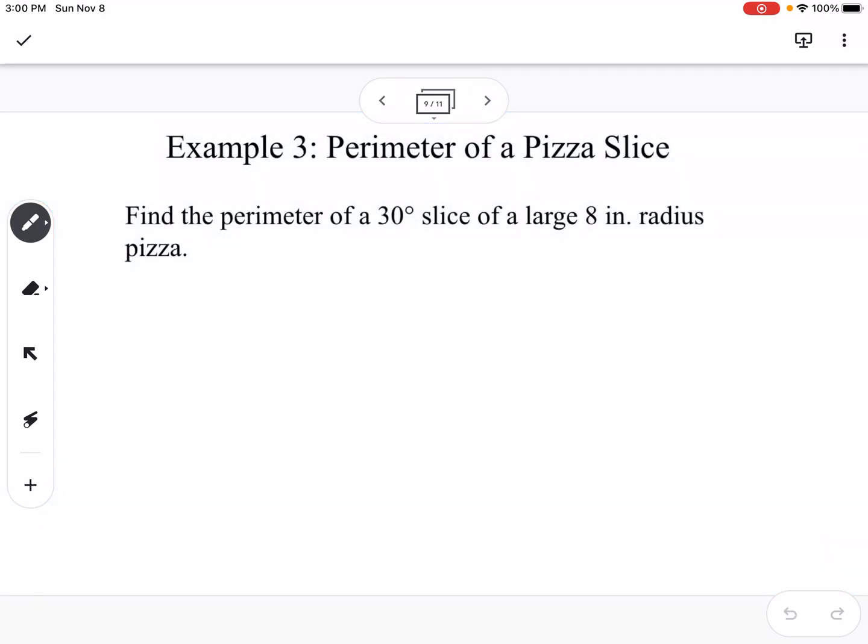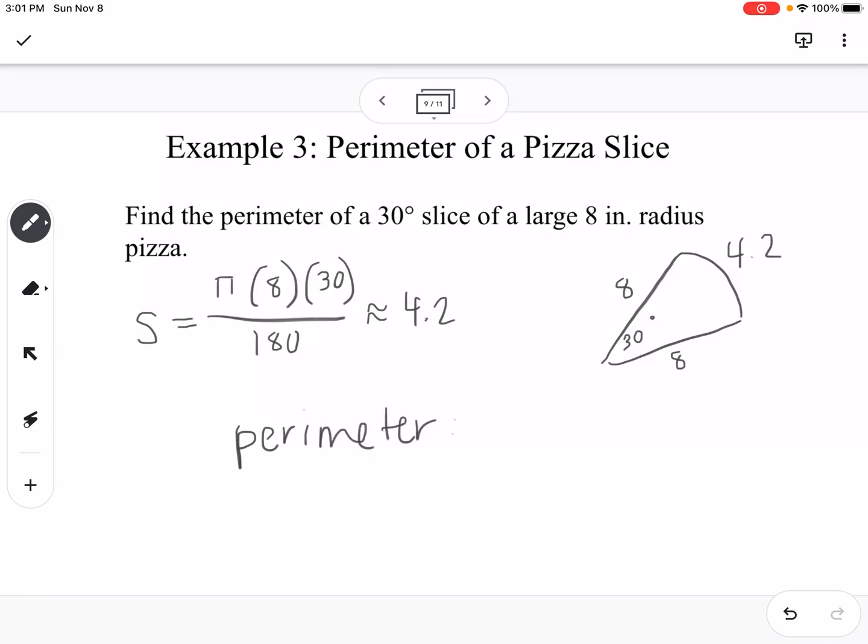So our next example, we're going to find the perimeter of a pizza slice. Find the perimeter of a 30-degree slice of a large 8-inch radius pizza. So if we think about what this pizza slice looks like here, we know that this angle is 30 degrees. We know that the radius of the pizza is 8, so that means that both of those side lengths are going to be 8, and we need to find the arc length. So we're going to use s equals, we're going to use the formula using degrees. So this would be π times 8 times 30 divided by 180, and we get approximately 4.2 inches. So that means that this is 4.2. So to find the perimeter, we would add up the 8 plus 8 plus 4.2, so we get 20.2 inches.